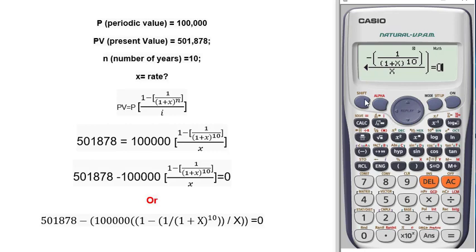Now we have to press shift then solve. Ignore this information, just now press equal sign. So this is your result: x equal to 0.14999999405, which is around 15%.